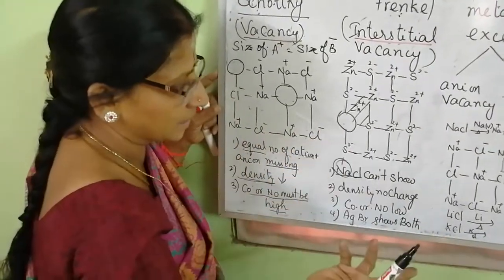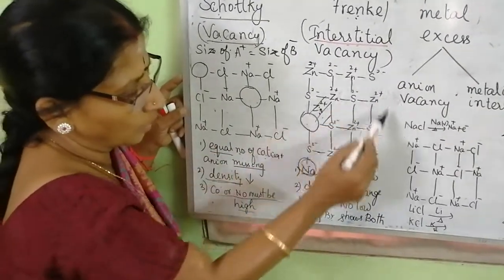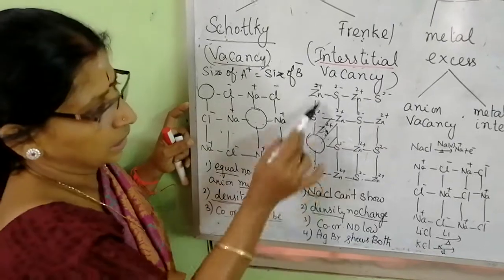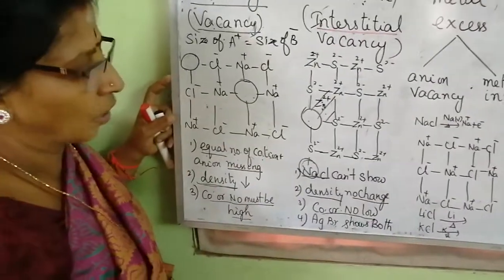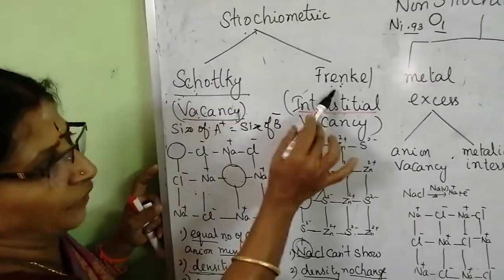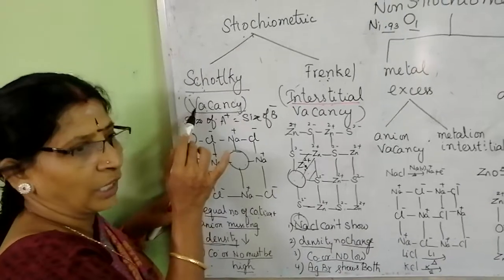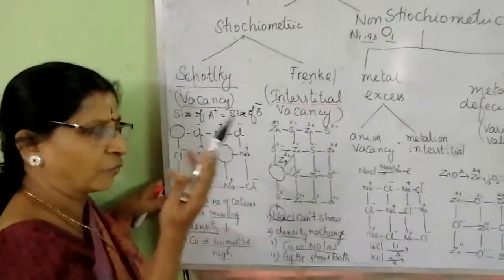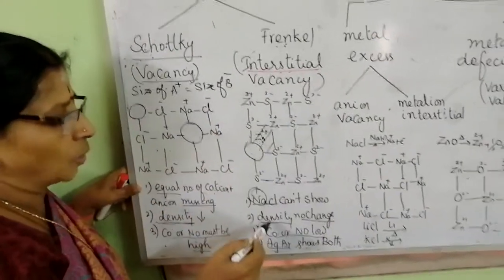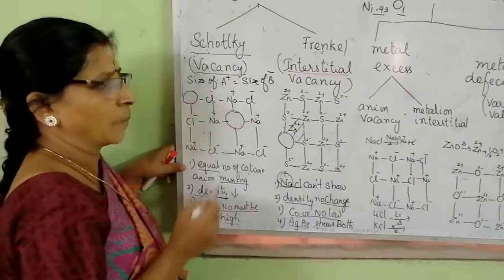In Frenkel defect, the zinc ion is missing from its lattice point but it occupies another interstitial void space. So the mass of the unit cell remains the same, and there is no density change. This defect is shown by ionic compounds with low coordination number. AgBr is one peculiar example which shows both Frenkel defect as well as Schottky defect.